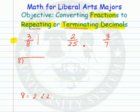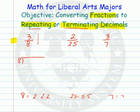So this one will terminate. In simplest form, yes. The 25 is 5 times 5, so it's going to terminate. But 7 has factors other than 5 and/or 2, so this one's going to repeat. How many digits will repeat? Well, the most you can repeat is one less than that denominator.